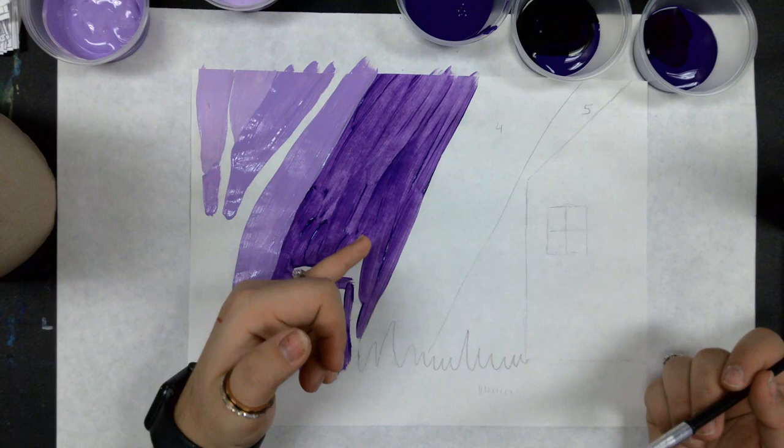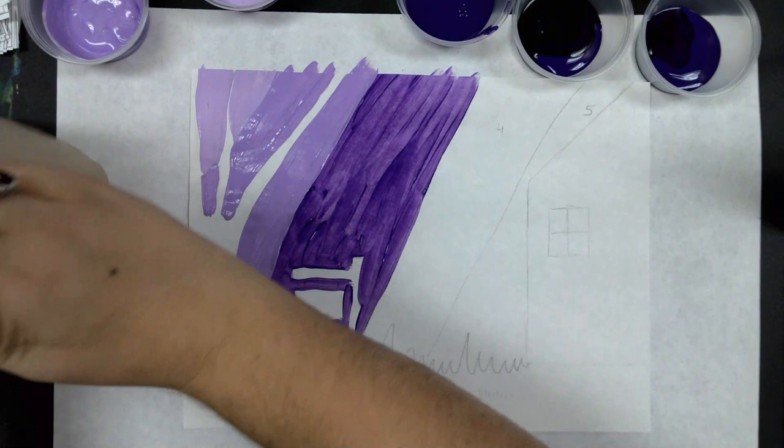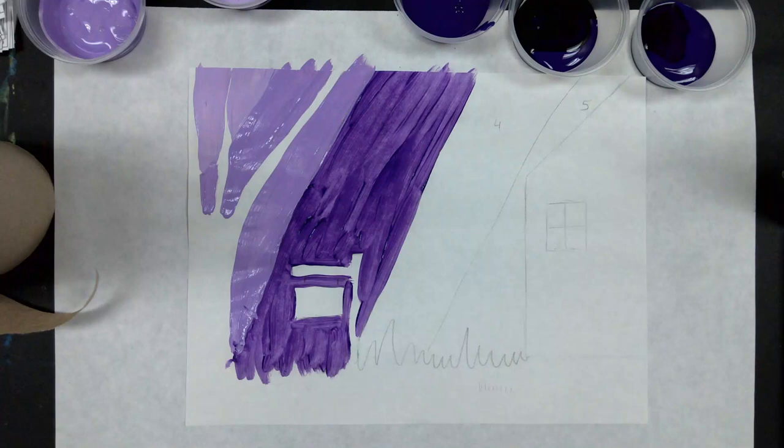So we have our lightest, a little bit darker, our base color, and now we're going to go into our shades. So if a tint is any color plus white, a shade is the opposite. So a shade would be any color plus, you guessed it, black.